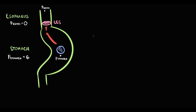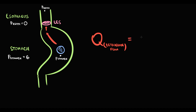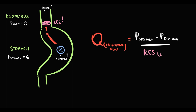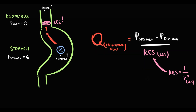To explain this, we can write retrograde flow as a formula: retrograde flow of stomach content equals pressure inside the stomach minus pressure inside the esophagus, divided by the resistance created by the lower esophageal sphincter. Resistance is inversely proportional to the fourth power of the radius. Because pressure inside the esophagus is approximately zero, there are only two major factors that determine retrograde flow: intra-abdominal pressure, which creates pressure inside the stomach, and resistance of the lower esophageal sphincter, determined by its radius.